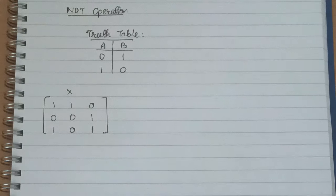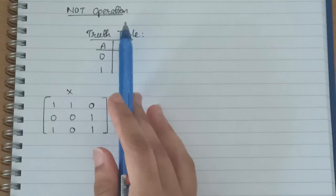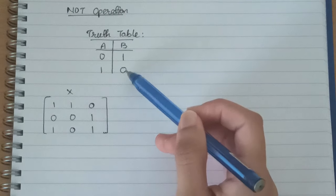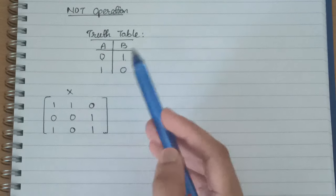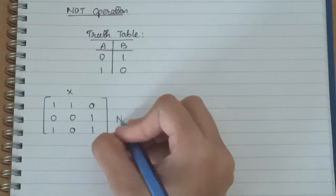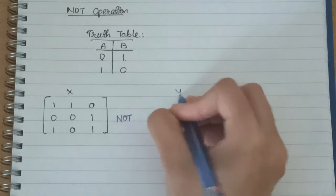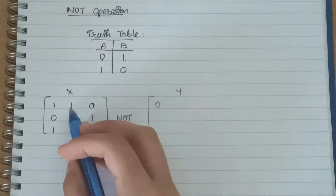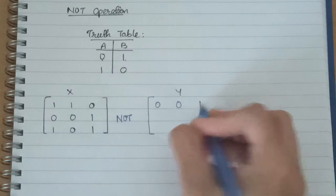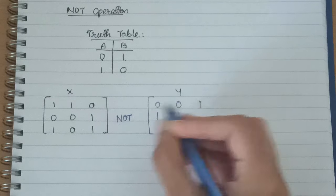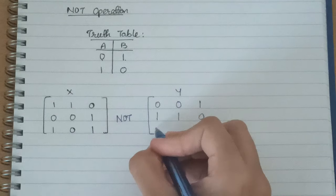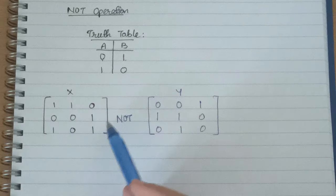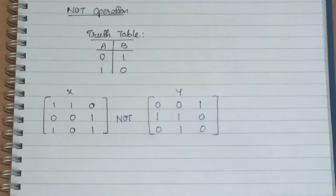The last operation is NOT, which is performed on a single image only — not between two images. The truth table is simple: if input is 0, output is 1; if input is 1, output is 0 — it is the inverse. Taking our previous answer and applying NOT: 1 becomes 0, 0 becomes 1, and so on, giving an output that is simply the inverse of the input image. That's it for this lecture — see you in the next one.